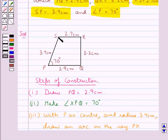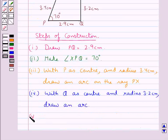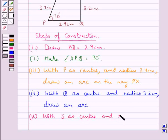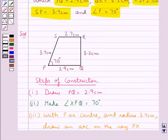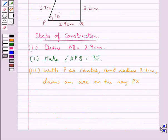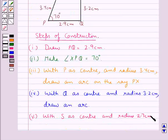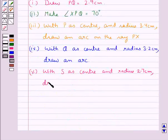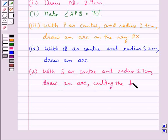Then in the next step we take S as the center and radius 2.7 cm. Draw an arc cutting the previous arc at point R.